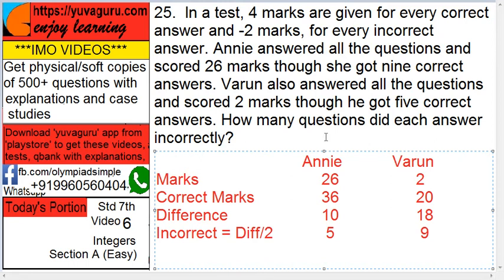Simple — make two columns: Annie and Varun. Now marks: Annie has 26, Varun has 2 marks. Then correct marks — she got 9 correct, so 9 × 4 = 36. And he got 5 correct, so 5 × 4 = 20.